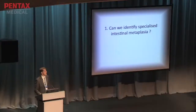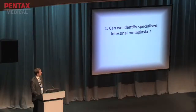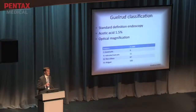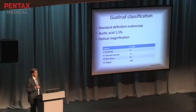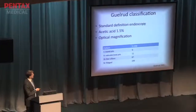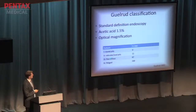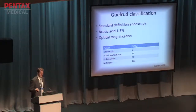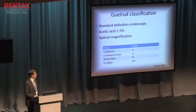Gilrud first described a classification system for intestinal metaplasia just over ten years ago, using acetic acid and standard-definition endoscopy with magnification. Acetic acid is a fatty acid, used in colposcopy for fifteen to twenty years, and is also a mucolytic agent — it turns the surface mucosa white by denaturing cellular proteins. Four characteristics were identified: round pits, reticular oval pits, fine villus, and ridged. Round pits are typical of fundic mucosa; reticular oval pits are typical of the cardia; villus and ridged-type pits are more typical of intestinal metaplasia.